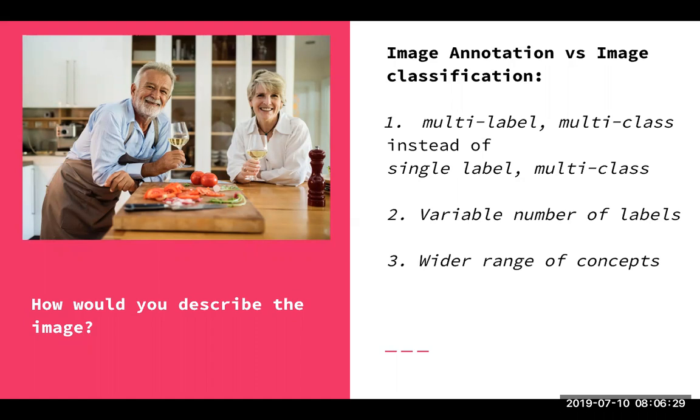And then the third important difference is that the concept that describes an image stretch a wide variety of concepts. Some more abstract and some more very concrete. We could describe this image as for example people or food, pretty abstract, but we could also say tomatoes and cutting block wine and go into much more detail. Image annotation needs to deal with these wide range of concepts.